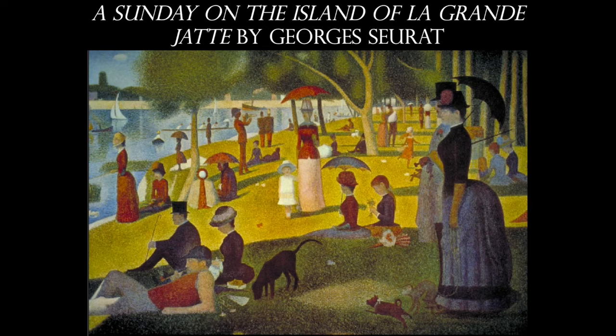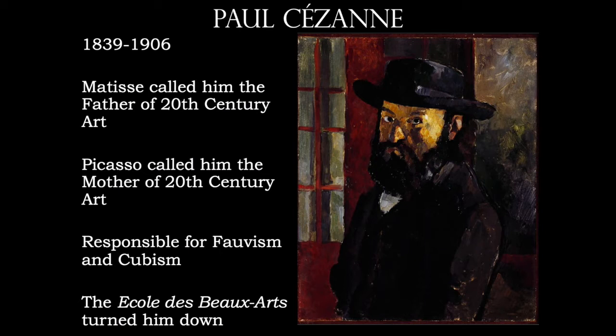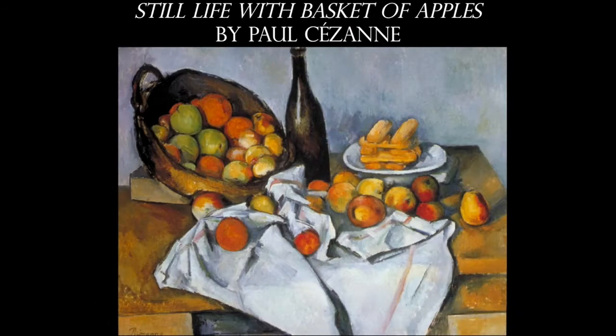Seurat would have been the leader of the Post-Impressionists, but he died very young — around age 31 or 32 — from a respiratory illness. He was interested in color theory and developed Pointillism, which we discussed in the color chapter: the idea of not mixing paint traditionally, but using a dot of blue next to a dot of yellow to create the color sensation of green. The entire modern art movement is really about experimentation, particularly scientific experimentation — there is a definite tie between art and science and physics. Cézanne is noted as the father — or in Picasso's words, the mother — of 20th-century art, responsible for leading us into both Fauvism and Cubism.